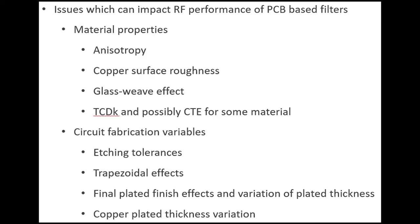The first material property is sometimes overlooked, and that is anisotropy. Anisotropy has to do with Dk differences on the different axes of materials. Most high-frequency materials do have anisotropy, where the Z-axis — the thickness axis — will have a different Dk than the XY plane. Copper surface roughness is another issue that is encountered sometimes, and then glass weave effect, and then TCDk. TCDk is the thermal coefficient of dielectric constant — that's how much the dielectric constant will change with a change in temperature.